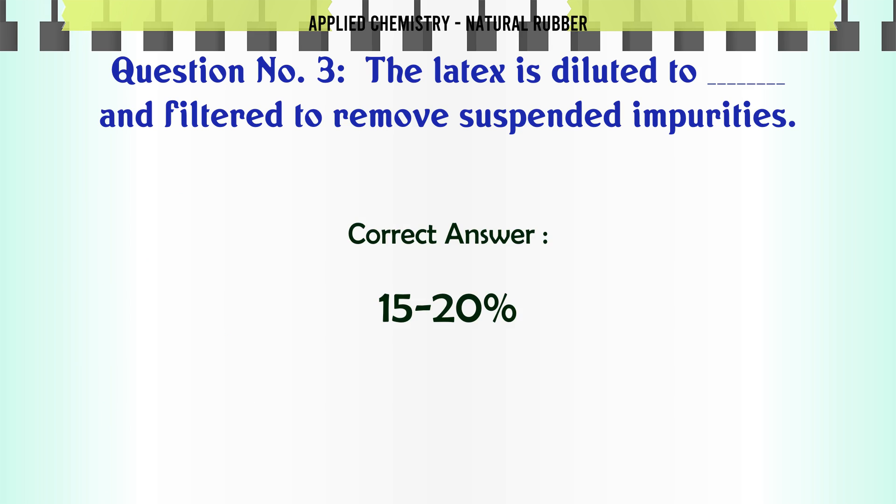While producing smoked rubber, the latex reacted with formic acid with vertical partition plates inserted and left undisturbed for: A) 13 hours, B) 14 hours, C) 15 hours, D) 16 hours. The correct answer is 16 hours.